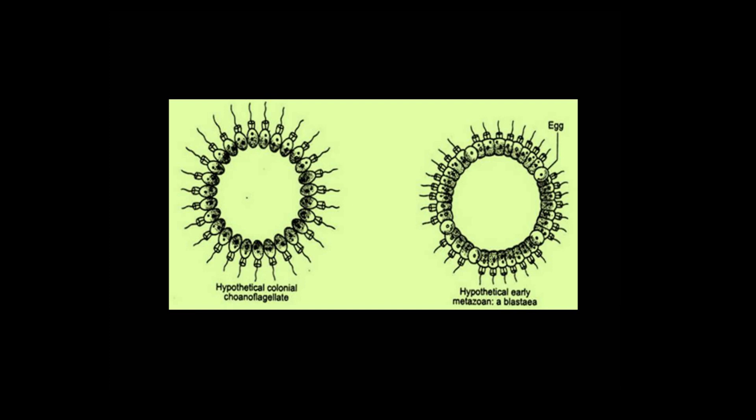The planula ancestor is represented as a small ovoid pelagic animals with radial symmetry containing solid mass of cells, and the internal cell mass to be considered as the migratory cells of the blastula stage.